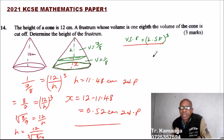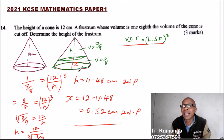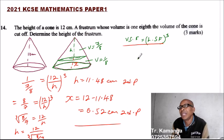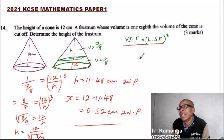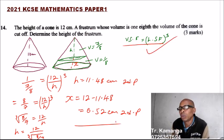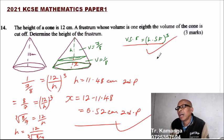You should be able to get 3 marks for that. The knowledge being tested here is what you learned in similarity and enlargement: area scale factor equals linear scale factor squared, volume scale factor equals linear scale factor cubed, and linear scale factor equals the height of the image divided by the height of the object.